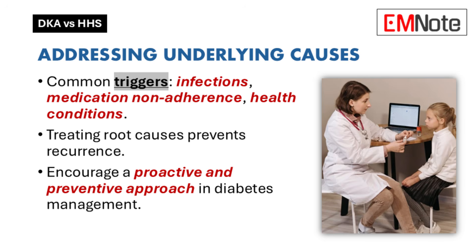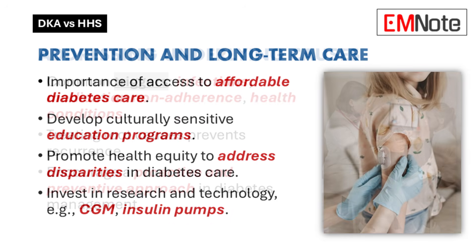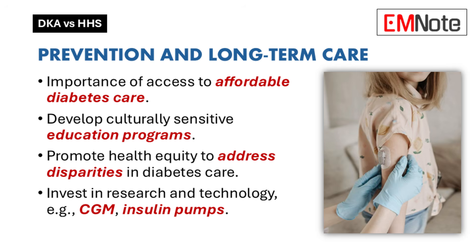By addressing underlying causes, we can help prevent future episodes and improve long-term outcomes. Prevention is as important as treatment — it's about shifting our mindset from just reacting to acute situations to being more proactive about diabetes management. That means thinking at the system level too: ensuring access to affordable diabetes care, developing culturally sensitive education programs, and addressing the health disparities that hit some communities harder than others, because diabetes doesn't affect everyone equally.